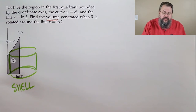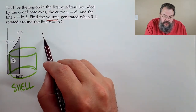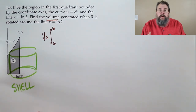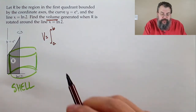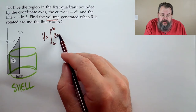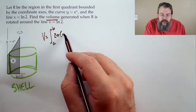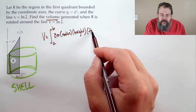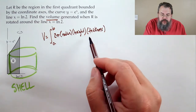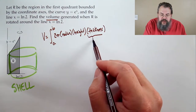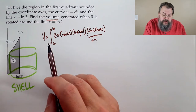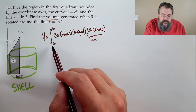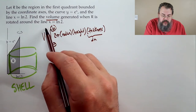The shell method works by adding up from start to finish — that's how integration always works. We have 2π, then a radius, a height, and a thickness. The thickness is dx. The bounds are from zero to log two. The height is e to the x, from zero up to e to the x.